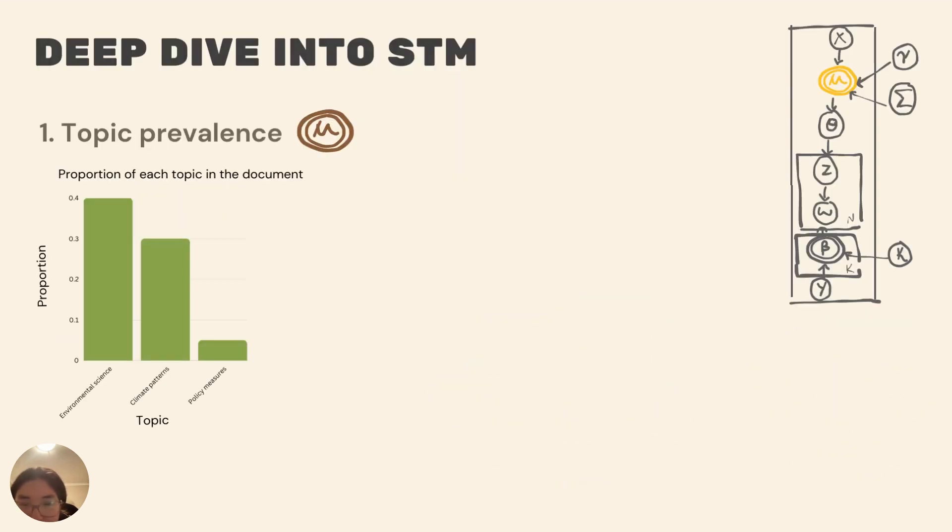So now let's dive into the core theory of STM using Figure 1 from the original paper and focusing on topic prevalence and topic content. Topic prevalence represents the proportions of topics in a document. For example,